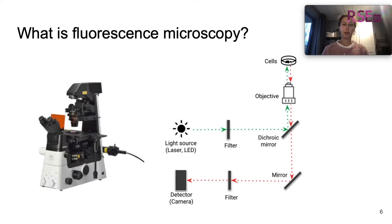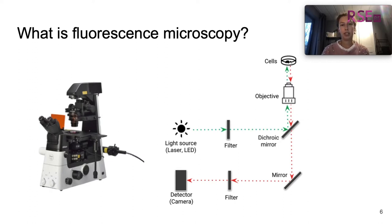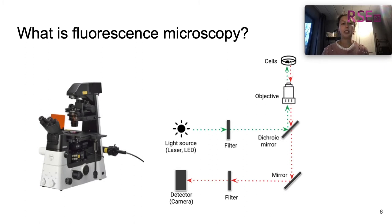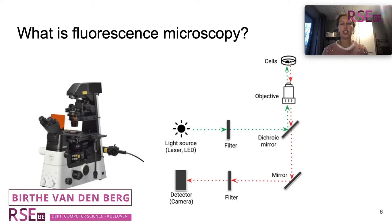We reflect on a dichroic mirror and pass through the objectives going to the cells. If these cells are fluorescently labeled, they will absorb the light that they are exposed to and emit a different color of fluorescent light. This fluorescent light will pass through the objectives and through the mirrors, through another filter to the detector, which is usually a camera. This last filter is called the emission filter, and it should filter out all noise, environmental light, or excitation light in order to only detect the fluorescent light at the camera.